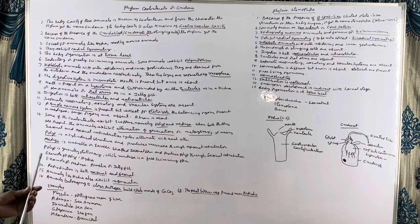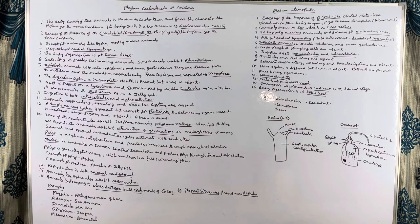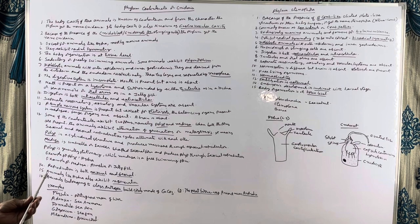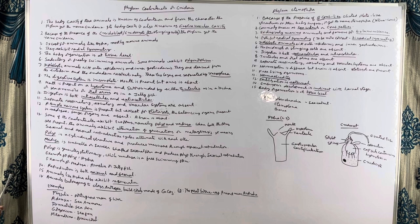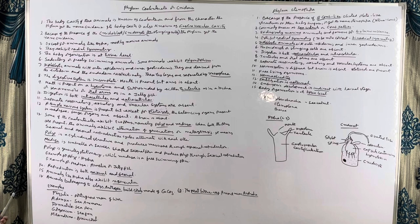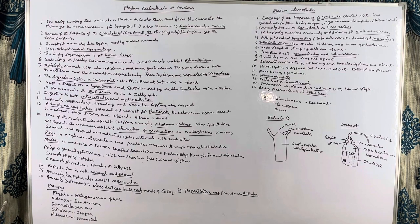The stinging cells help in the defense of the animals. Except for animals like Hydra, all are marine animals found only in seawater. The symmetry exhibited by these animals is radial symmetry.